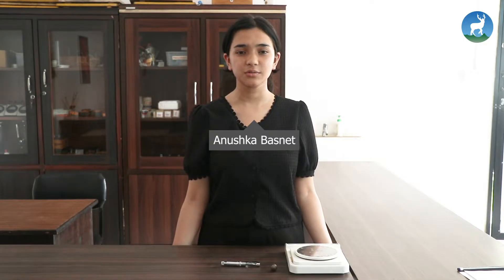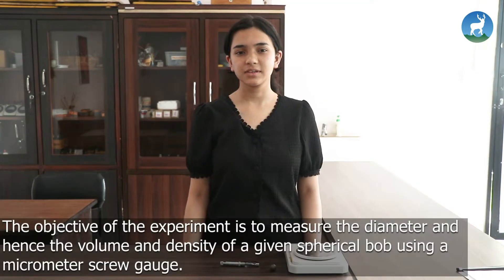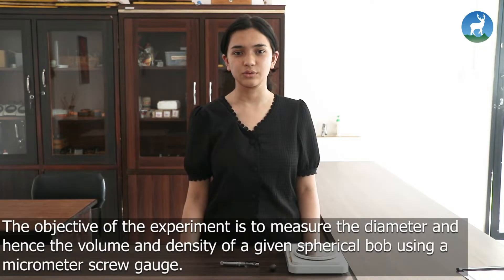Today I'm going to demonstrate an experiment in physics using an instrument called micrometer screw gauge. The objective of the experiment is to measure the diameter and hence the volume and density of a spherical bob using micrometer screw gauge.